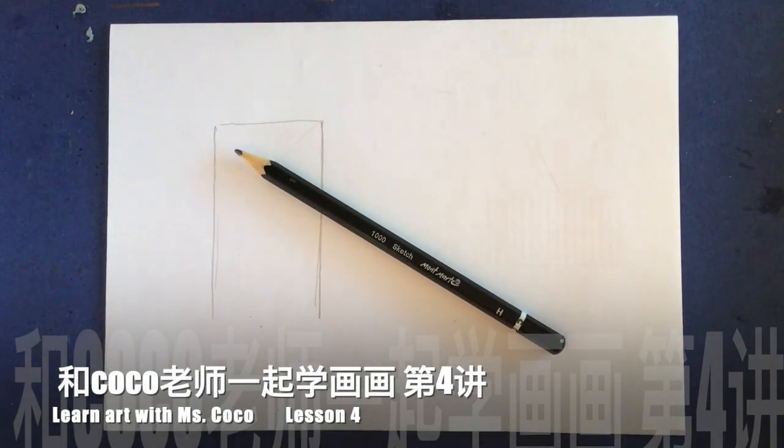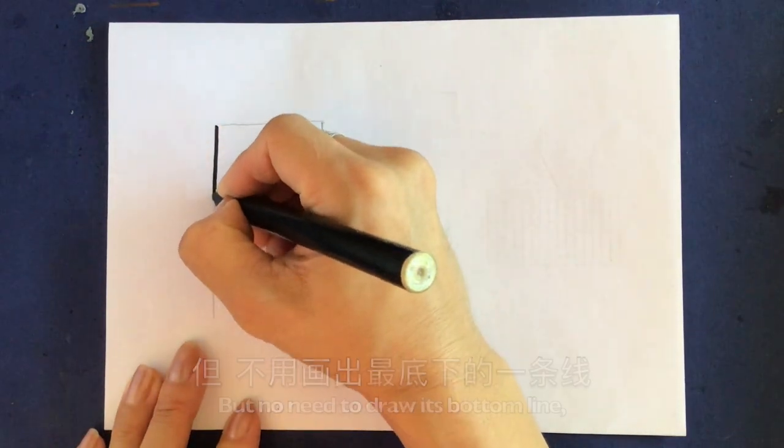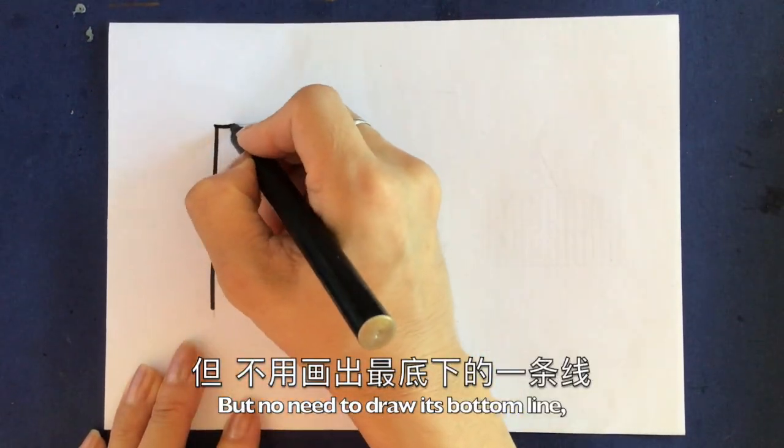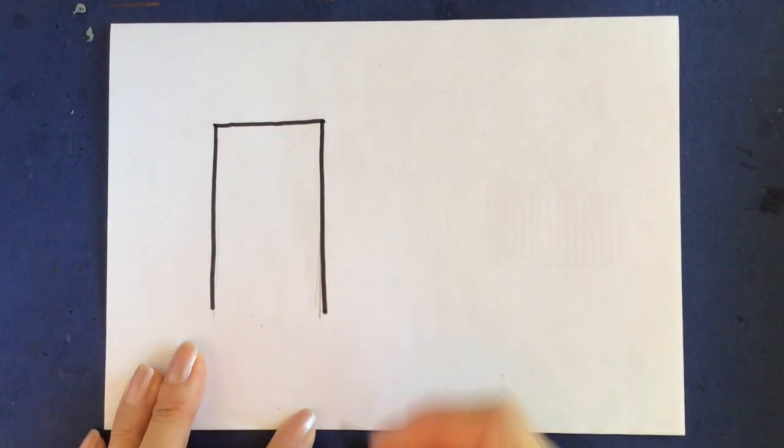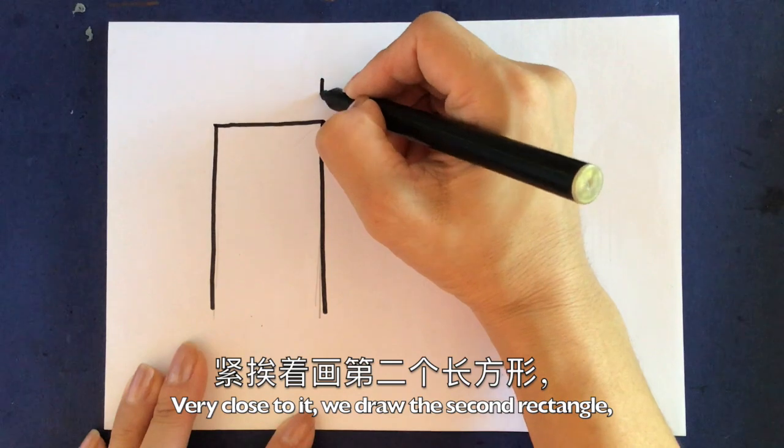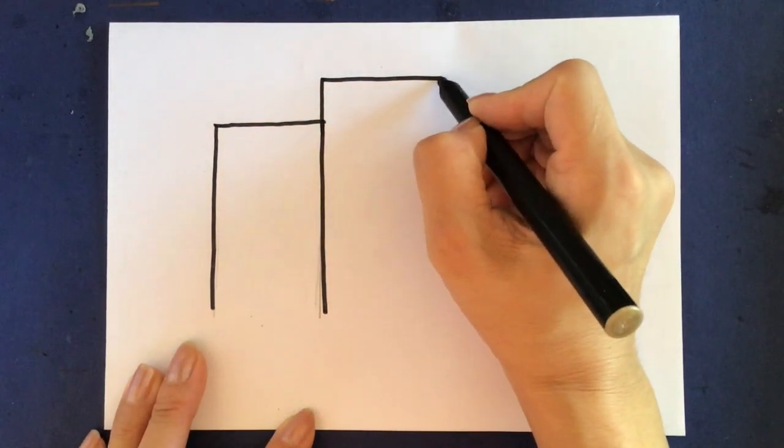我们先画一个长方形, let's draw a rectangle first. 但不用画出最底下的一条线。But no need to draw its bottom line. 紧挨着画第二个长方形。Very close to it, we draw the second rectangle.